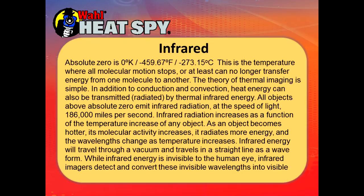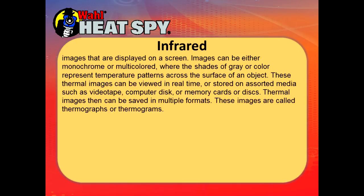Infrared radiation increases as a function of temperature increase of any object. As an object becomes hotter, its molecular activity increases, it radiates more energy, and the wavelengths change as temperature increases. Infrared energy travels through a vacuum and travels in a straight line as a waveform. While infrared energy is invisible to the human eye, infrared imagers detect and convert these invisible wavelengths into visible images displayed on a screen. Images can be either monochrome or multicolored where shades of gray or color represent temperature patterns across the surface. These thermal images can be viewed in real time or stored on media such as videotape, computer disk, memory cards, or memory disks, and saved in multiple formats. These are called thermograms or thermographs.